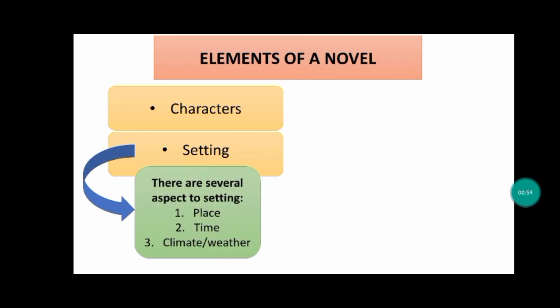There are several aspects to setting. Number one is place. This is the geographical location of the story. Since novels are lengthy, the story may move from one place to another. When asked to describe the setting, you may give the general geographical location. For example, in a novel which takes place in numerous locations around Italy, you may mention only the country, or you may describe several specific locations.